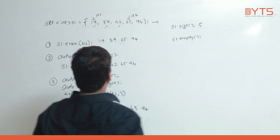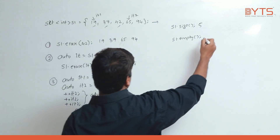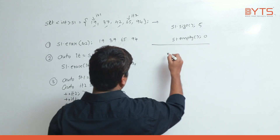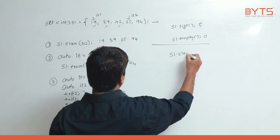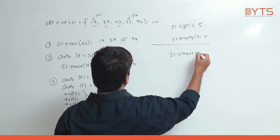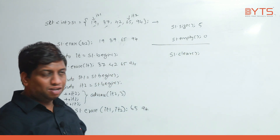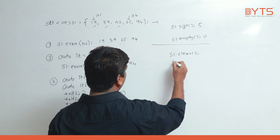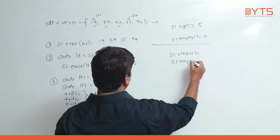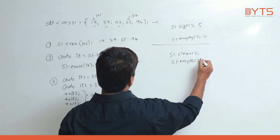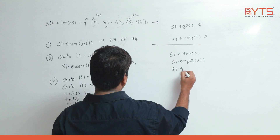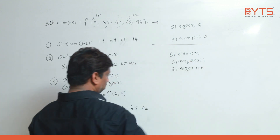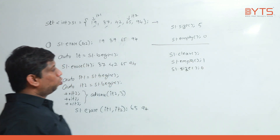s1.empty() — is this set empty? No, it is not empty, so it returns 0. Next, s1.clear() clears all the elements. As proof, s1.empty() now returns 1, or s1.size() returns zero.